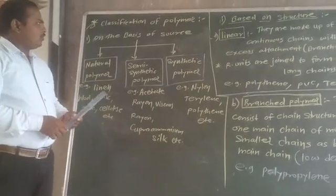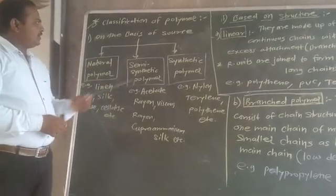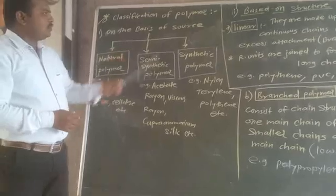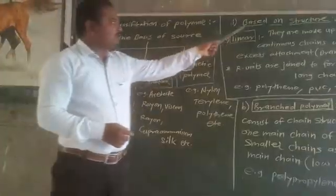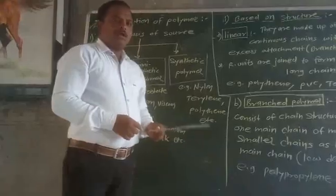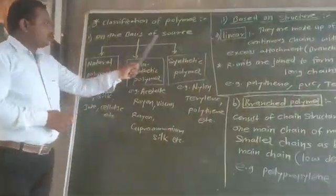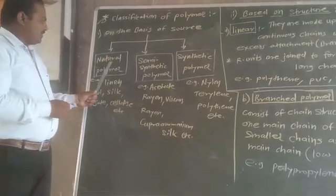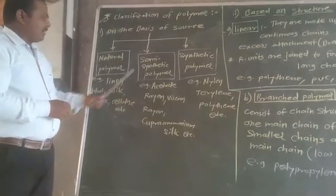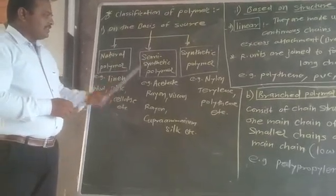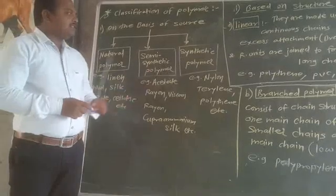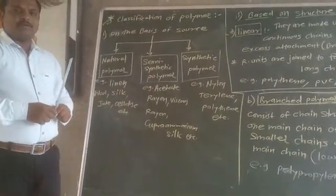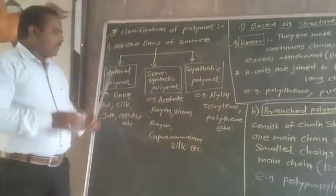In this video, we are concerned with the classification of polymers on the basis of source and on the basis of structure. On the basis of source, there are three types: natural polymer, semi-synthetic polymer, and synthetic polymer. We will see them one by one and step by step. It is very simple.